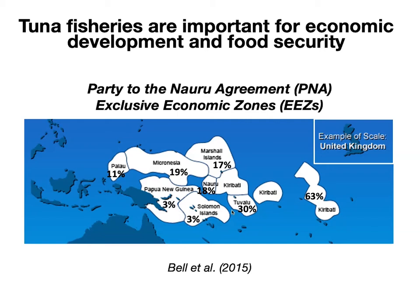These fishing days, once allocated, are sold to the highest bidder, which is usually a large tuna fishing company. The numbers on the map show the approximate percentages of each PNA nation's government revenue coming from fees that foreign fishing companies pay to access these EEZ waters — a really important part of their government revenues. This doesn't even account for the economic value of tuna eaten locally or tuna processing and small-scale local fishing industries, which provide thousands of jobs across the region.